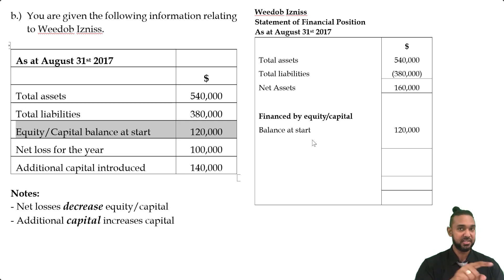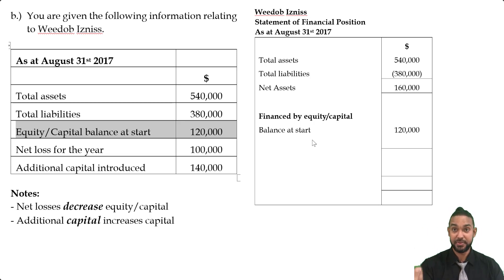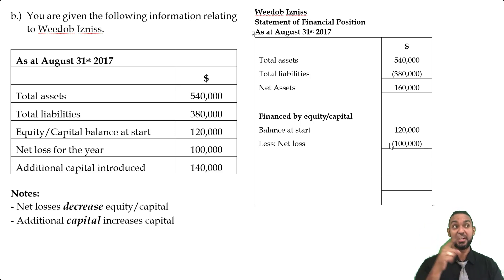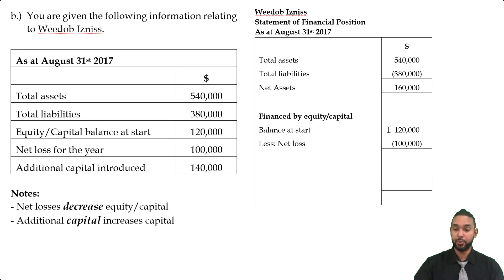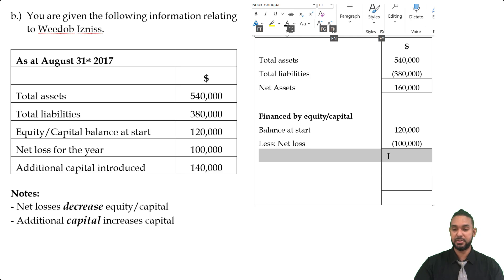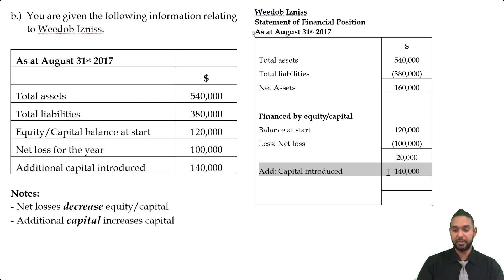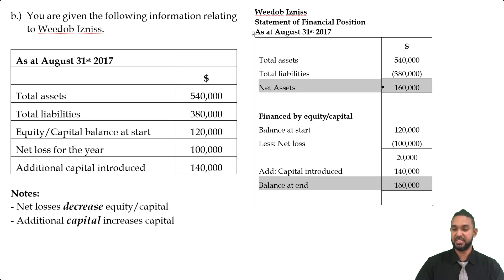If net profit increases capital, net losses will decrease capital because losses are the opposite of profit and hence have the opposite effect on capital. If a business makes a profit, that surplus goes to the owner. If the business makes a loss, it means they don't have enough revenue to cover their expenses, but the expenses still have to get paid — and that money comes from the owner's investment. So net losses decrease capital. After covering the net loss, we only have 20,000 left, and that's probably why the owner decided to introduce more capital. Additional capital introduced will obviously increase capital, so we add it here. 20 and 140 gives us 160, and this 160 matches the net asset figure on top.